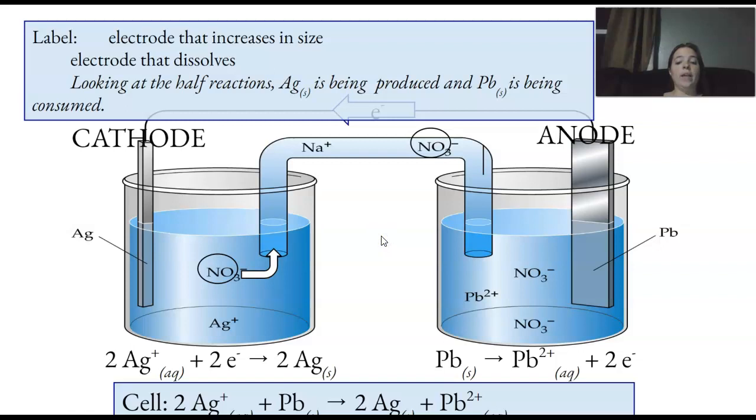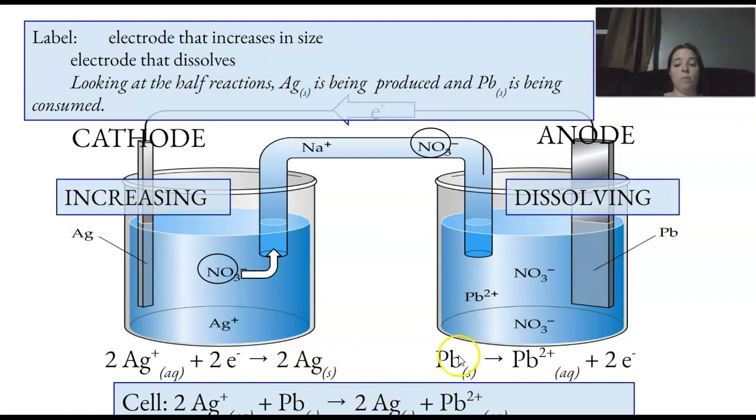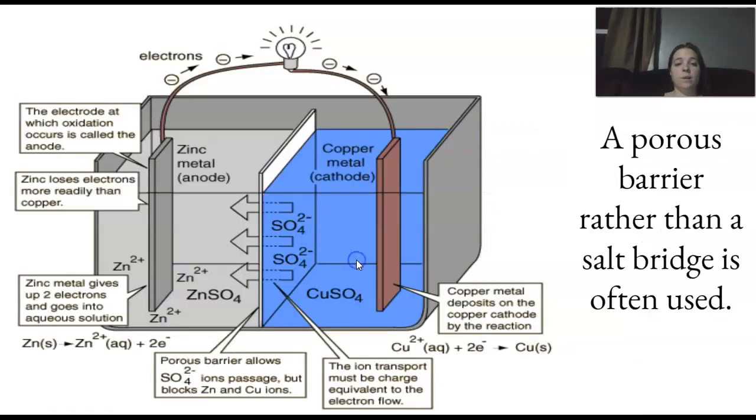Okay. Which one increases and which one dissolves? So, this one dissolves because I'm going from this solid to an ion. So, it's oxidizing. It's getting smaller. My cathode increases. It's gaining electrons. Losing electrons, gaining. Losing dissolves. Gaining bigger. All right. So, looking at this real quick.